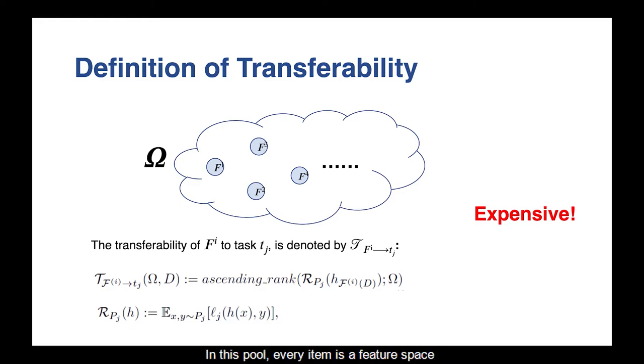Assume there is a knowledge pool omega. In this pool, every item is the feature space produced by some layers of a trained model. The transferability of two knowledge items is defined as the ascending rank of f in omega for solving the target task. Here, the rank is computed based on the standard empirical risk.